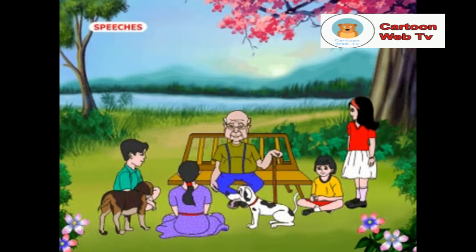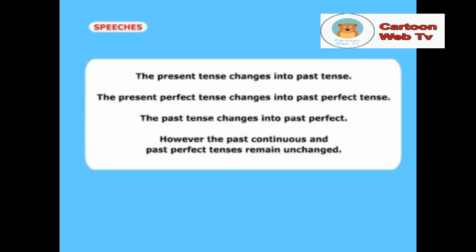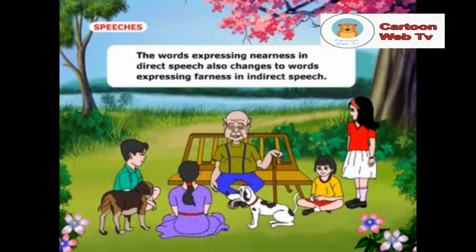And number five, the present tense verb want has become the past tense verb wanted. Children, you will have to note how the tenses change when a direct speech is converted into an indirect speech. However, the past continuous and the past perfect tenses remain unchanged. The words expressing nearness in direct speech also change to words expressing farness in indirect speech.